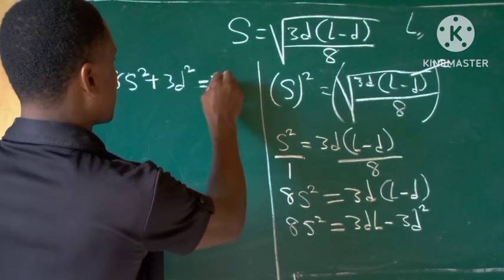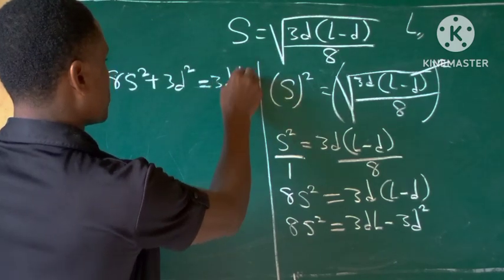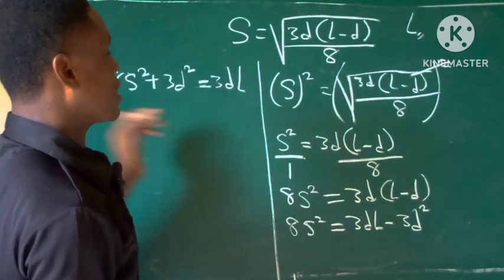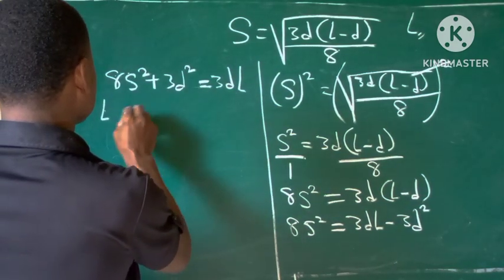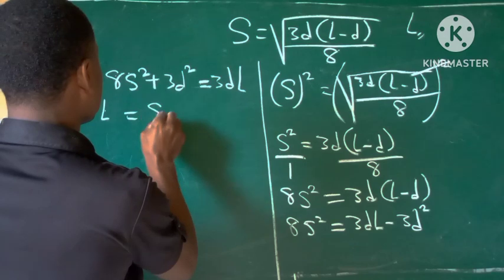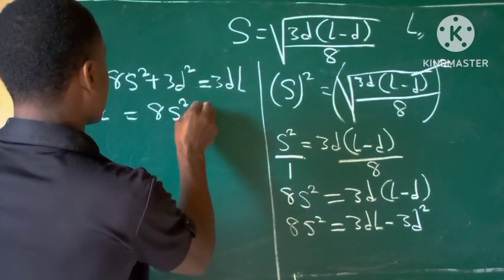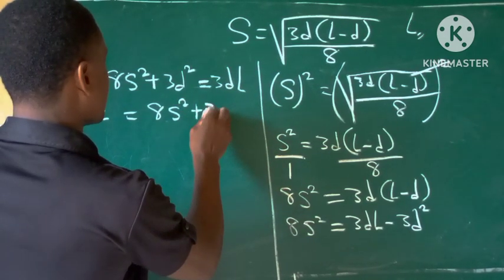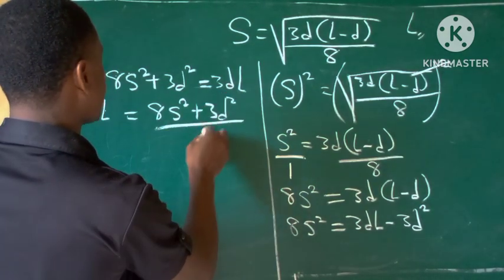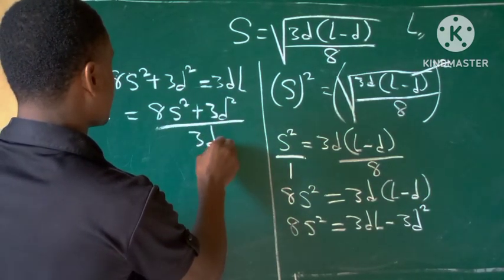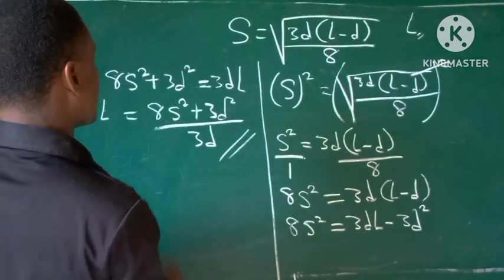We are asked to make l the subject of the formula, so l equals 8s squared plus 3d squared all over 3d. You can leave your answer in this form, it's correct.